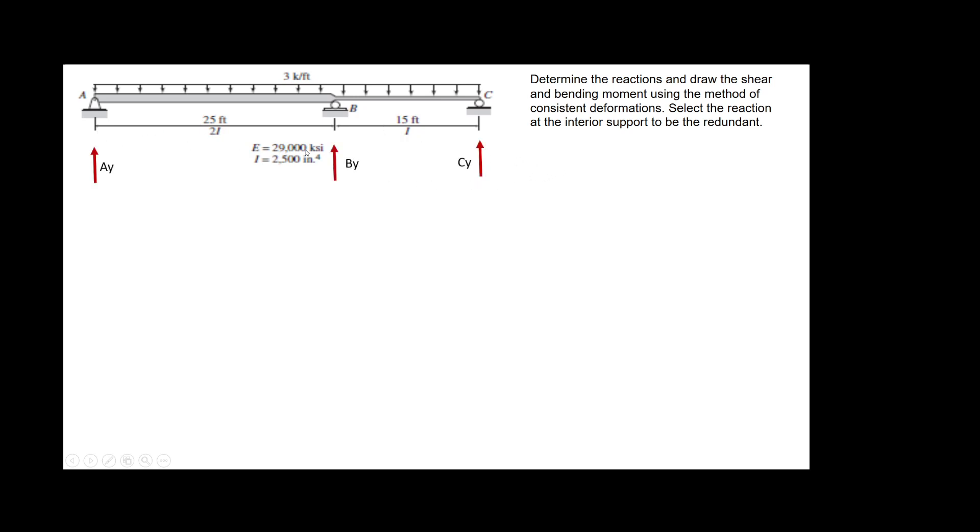First, you have to realize that it's a statically indeterminate problem because otherwise we shouldn't be trying to do this. So it's indeterminate and it has one redundant, one extra equation that we have to eliminate. The problem is already telling you to eliminate the interior support. When you eliminate the interior support, this beam remains stable, but now it's statically determinate.